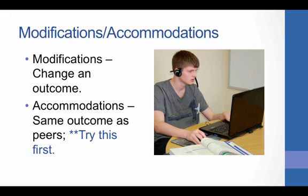Considering the need for modifications versus accommodations is vital when determining how best to support a student's needs. Think about a student in a high school English class assigned a five-page essay. If the student is allowed to type or dictate the essay while adhering to the five-page requirement, he was just given an accommodation. A modification for that same student might be that he only has to write the topic sentences of each paragraph. We want to expect that the student can do the same assignments as his or her peers when given needed accommodations, before we move towards modifying the assignment.